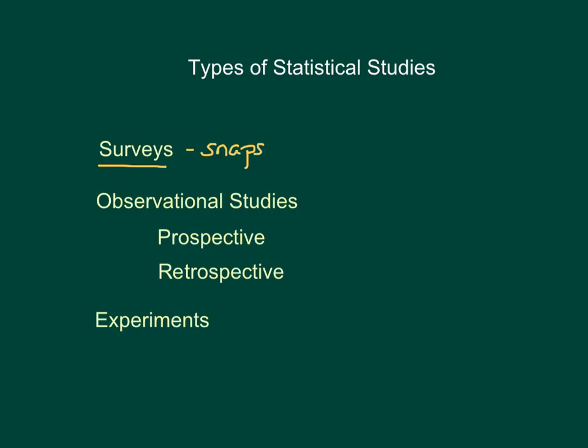They give you a quick view at one moment in time of a population or a sample from a population. I think the classic example are the research polls that are conducted before elections. Typically, those researchers will ask participants, either on a particular day or over the course of a particular week, what their preferences are in an election, and then use those results to predict the outcome.